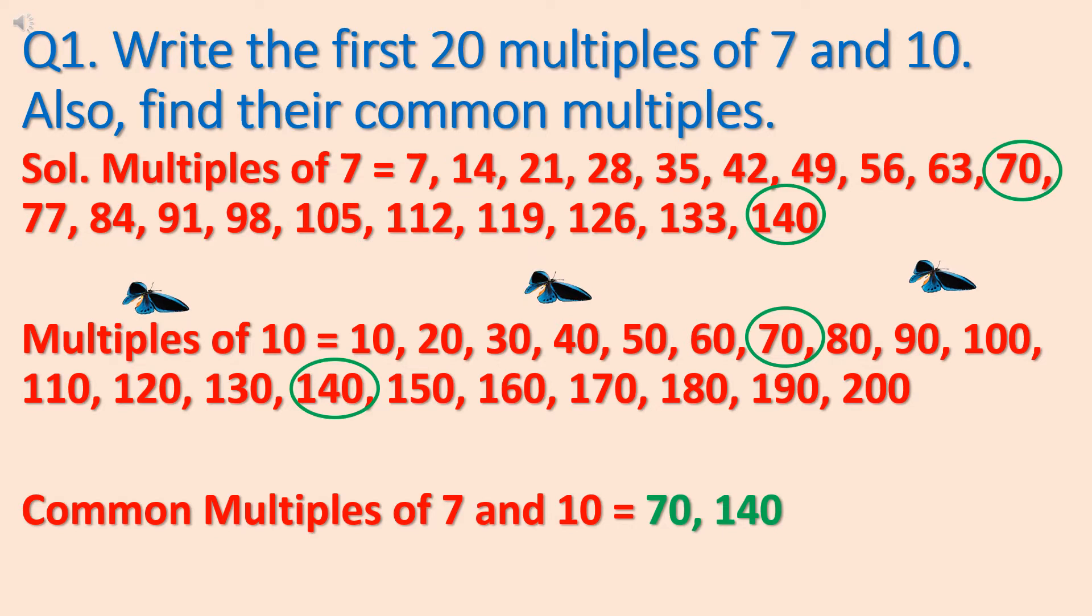So 7 ones are 7, 7 twos are 14, 7 threes are 21, 7 fours are 28. You know the table of 7. So first 10 multiples you can write easily. After that, next 10 multiples you can find out with the help of multiplication.